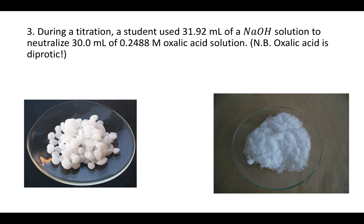Question 3 says during a titration a student used 31.92 milliliters of a sodium hydroxide solution to neutralize 30 milliliters of 0.2488 molar oxalic acid solution. Note well that oxalic acid is diprotic — it's going to give away two H's. An H is just a hydrogen with one proton; if you take the electron away you have H⁺, just a proton. If you only have one H to give away like HCl, it's monoprotic; two H's like H₂SO₄ makes it diprotic.